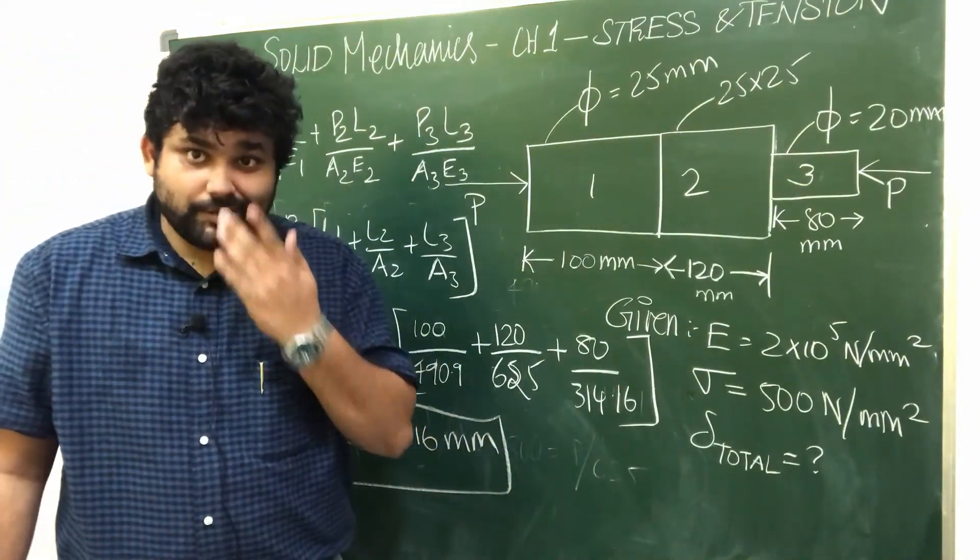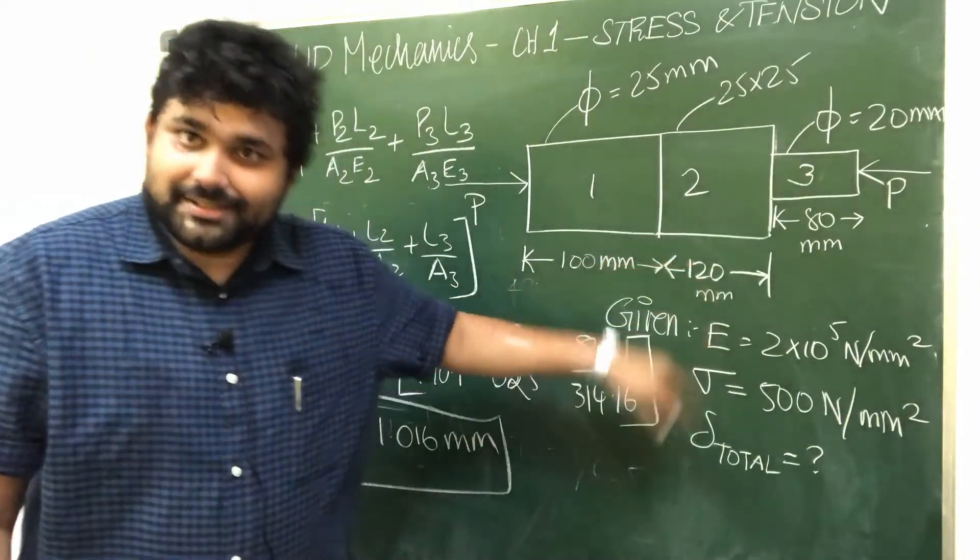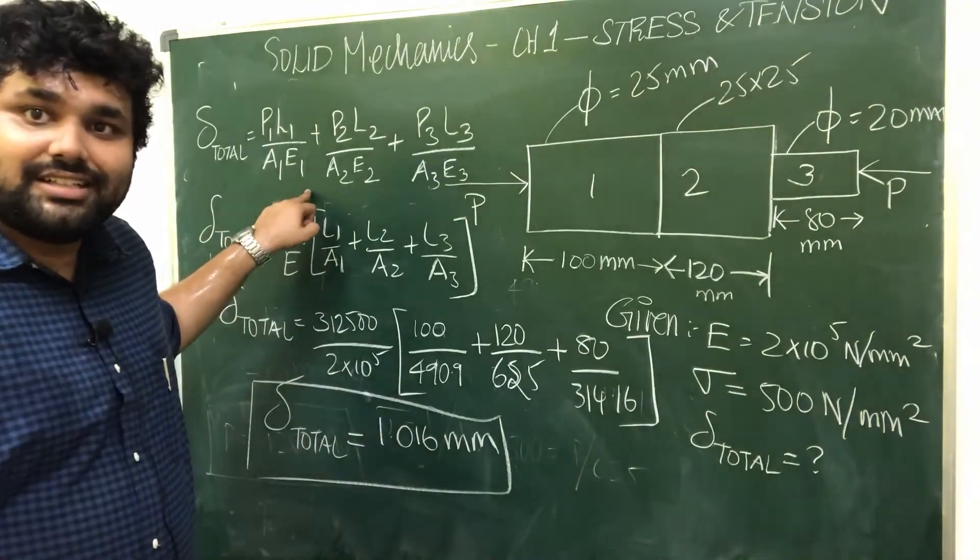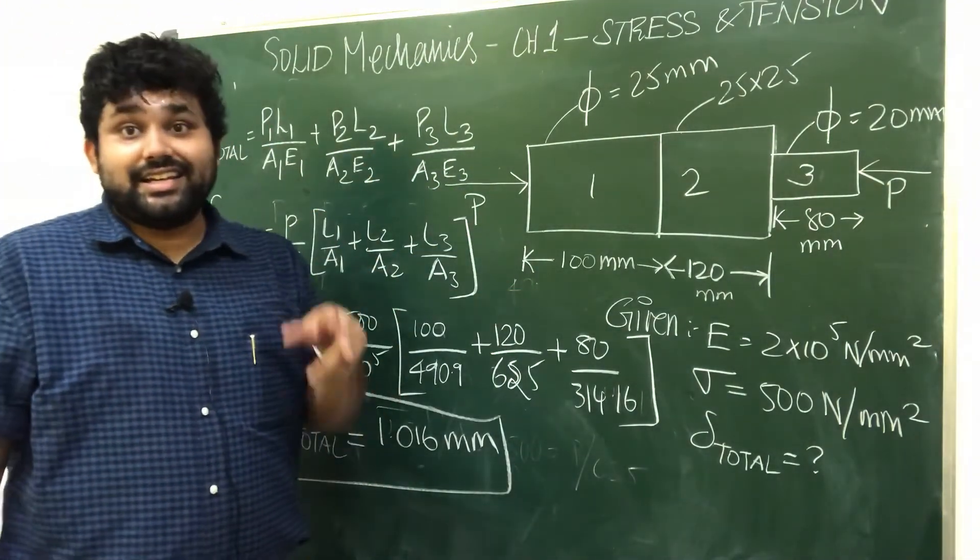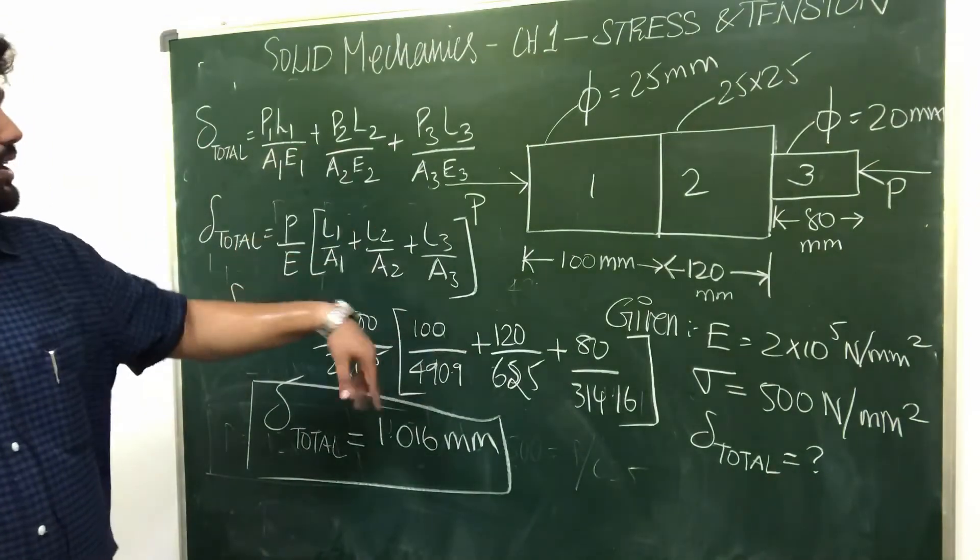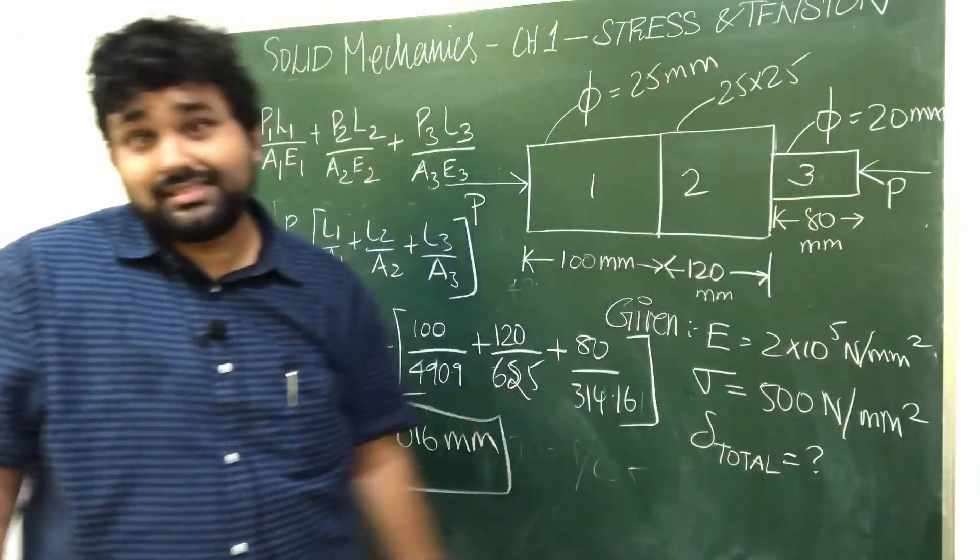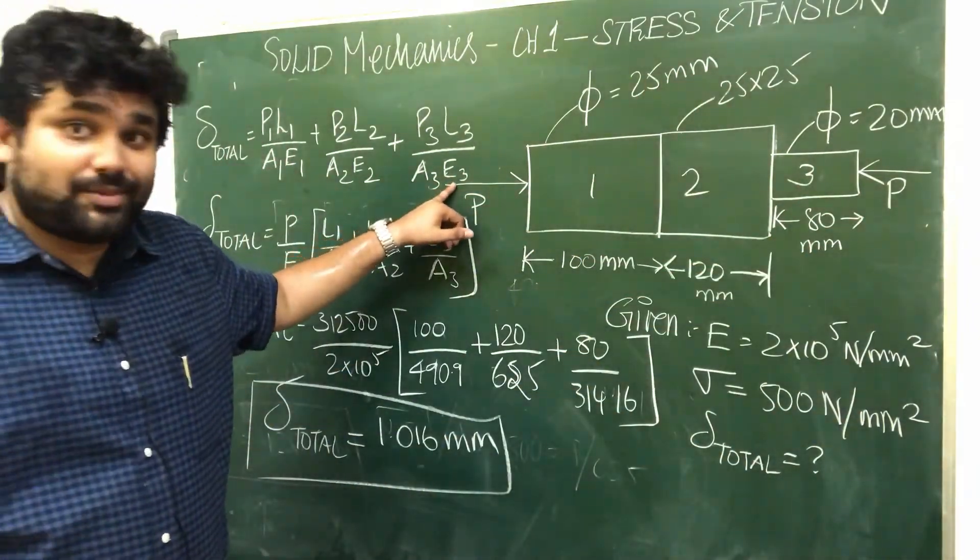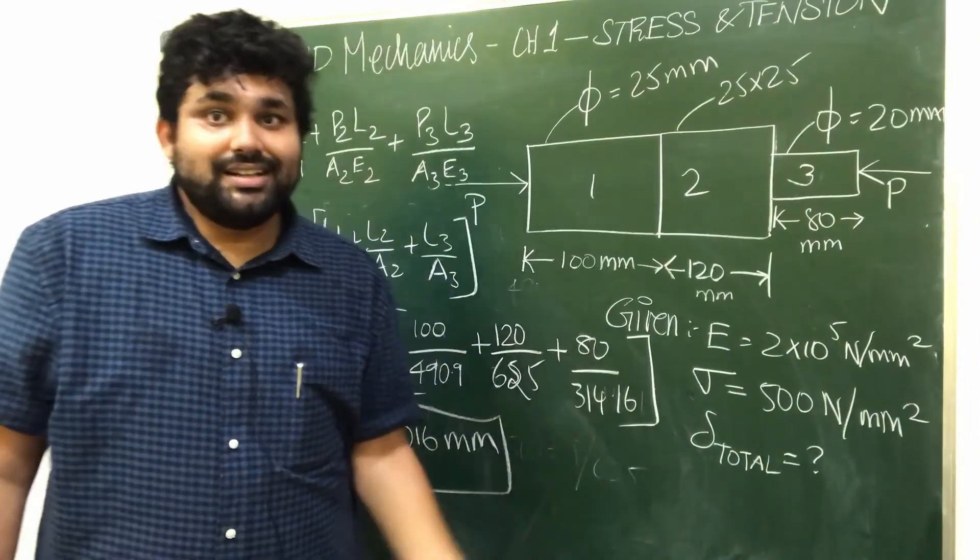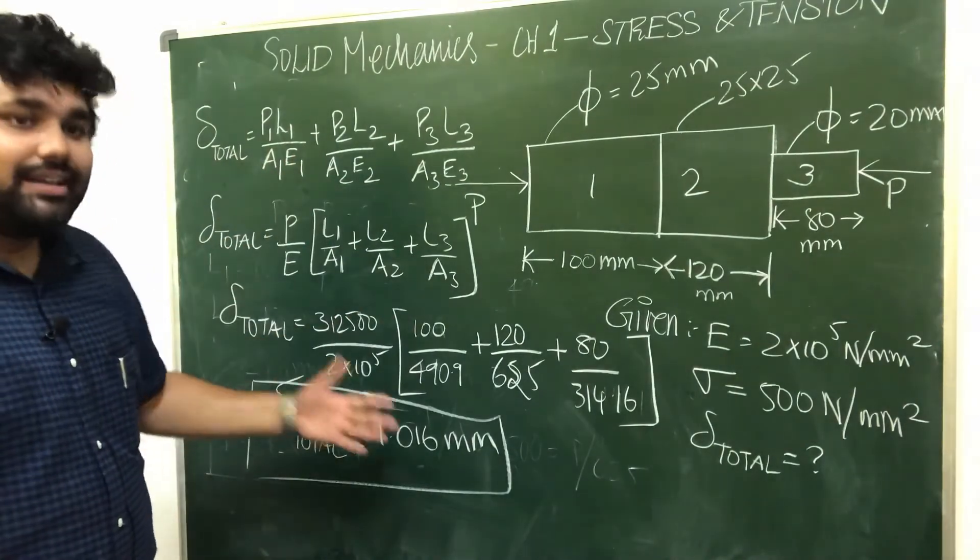So step bar involves problems. In the question, you have three things: first is the diagram, second is the given values, and third is the formula. In the formula there are values that need to be found. In this problem, you know all the lengths and cross sectional area dimensions. E is also given because materials are same. But load is unknown, so the model is to find load using given stress values and then substitute into the formula.